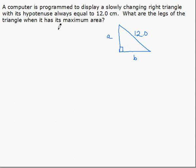We need a primary equation, which is the equation of the thing we want to minimize or maximize. In this case, we want to maximize the area, so our equation is going to be one-half the base times the height, or in this case, B times A, or half AB.